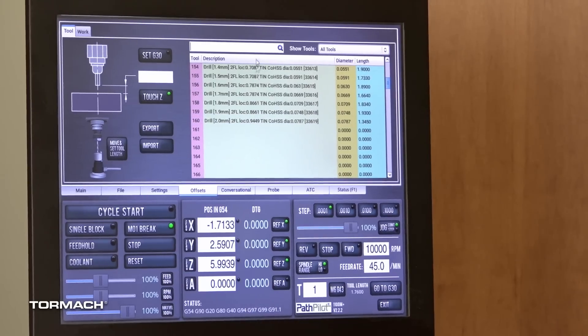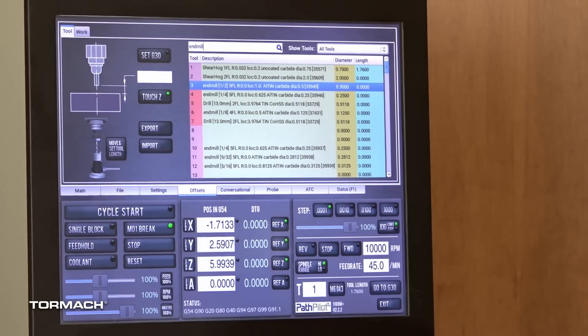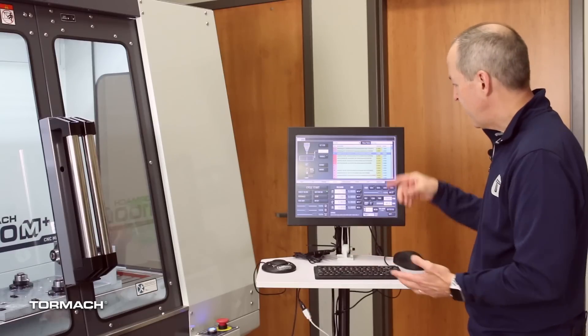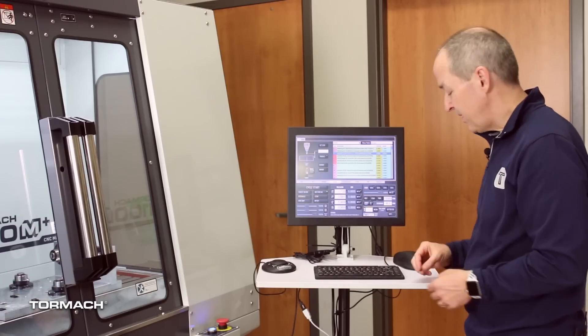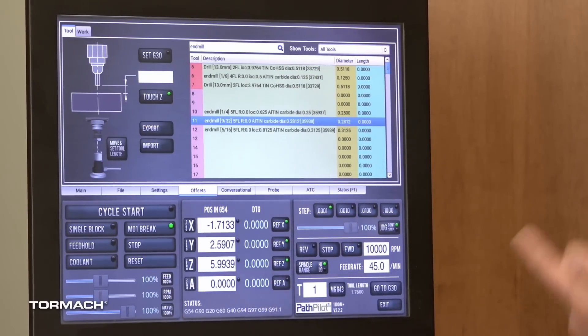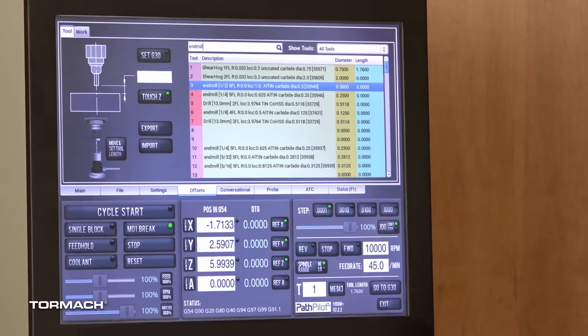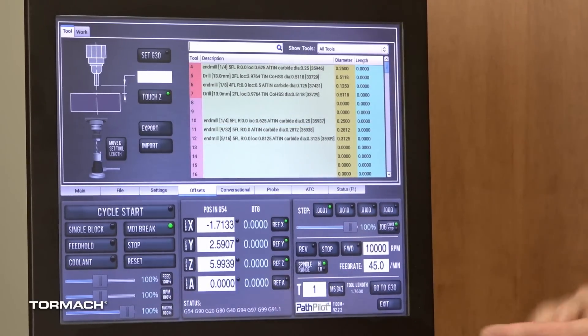You can also search easily for things like, let me type in end mill. So it finds the first end mill but I know I've got a lot of them and that's not the one I'm looking for. So if I want to search find next or find previous, the up arrows and down arrows pop you between those. The enter key also takes you forward and then escape just starts your search back over again.